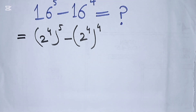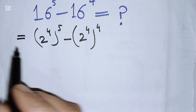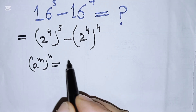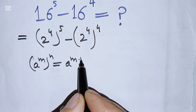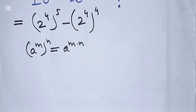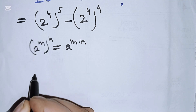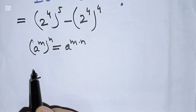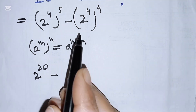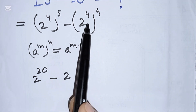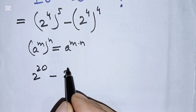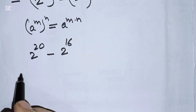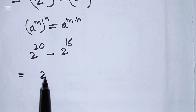Now we can solve this using the formula: (a^m)^n equals a^(m times n). So here, 2 with powers 4 times 5 equals 20, and then minus 2 with powers 4 times 4 equals 16. This gives us 2^20 minus 2^16.